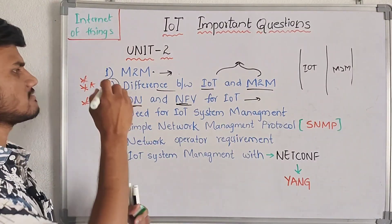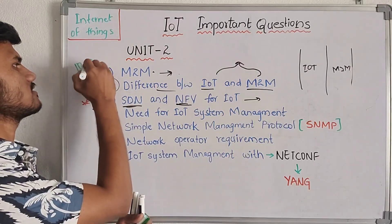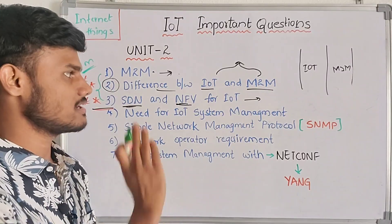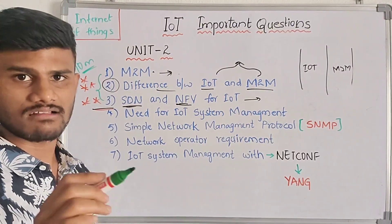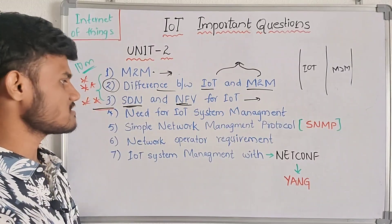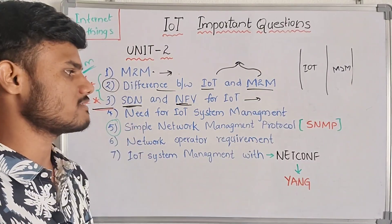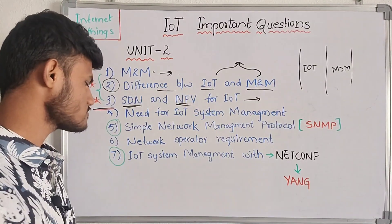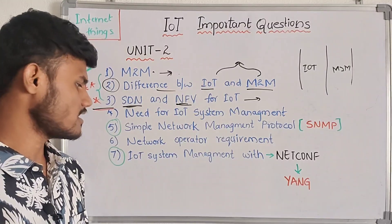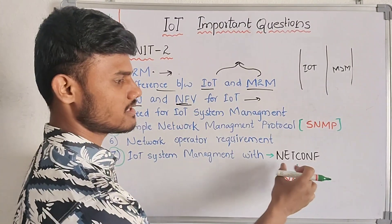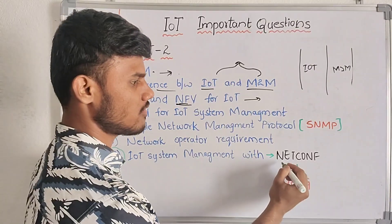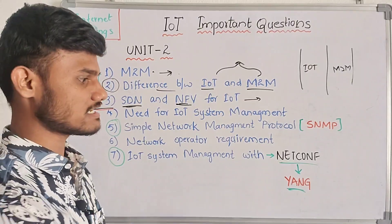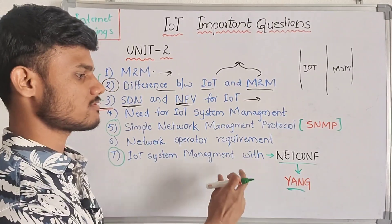You can easily get 10 marks — direct 10 marks is easy. There is still a 10% question mark. The answer is simple: simple network management protocol. This is the most important question — that is the seventh question. IoT system management with network configuration protocol, using YANG data modeling language. Data modeling language is easy.